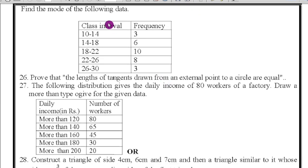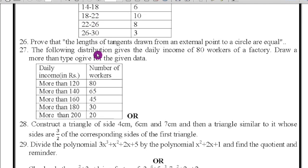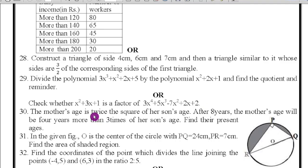Then here they asked find the mode of the following data. Here the highest frequency is 10, then F₀ will become 10, F₁ will become 6, F₂ will become 8, and h is L = 18 and h = 4. So the formula is the same, we will find out. Next, prove that the length of the tangents drawn from an external point to the circles are equal. Prove the theorem. 27th question: they are asking more than type of ogive. Easy again, you draw on the mark both.